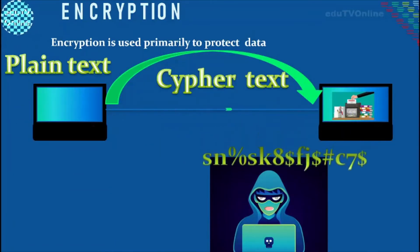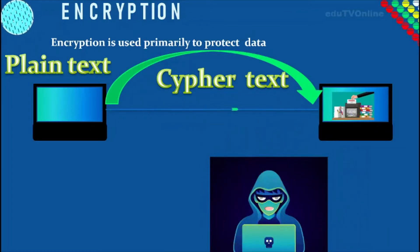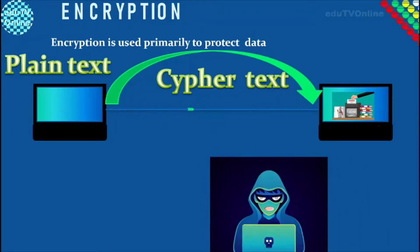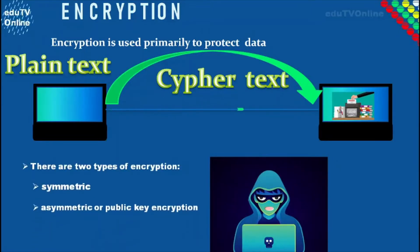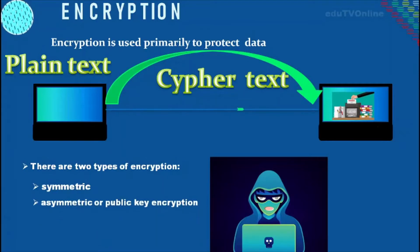Ciphertext is meaningless data, so hackers can't identify the actual meaning of the data. There are two types of encryption: symmetric encryption and asymmetric encryption.